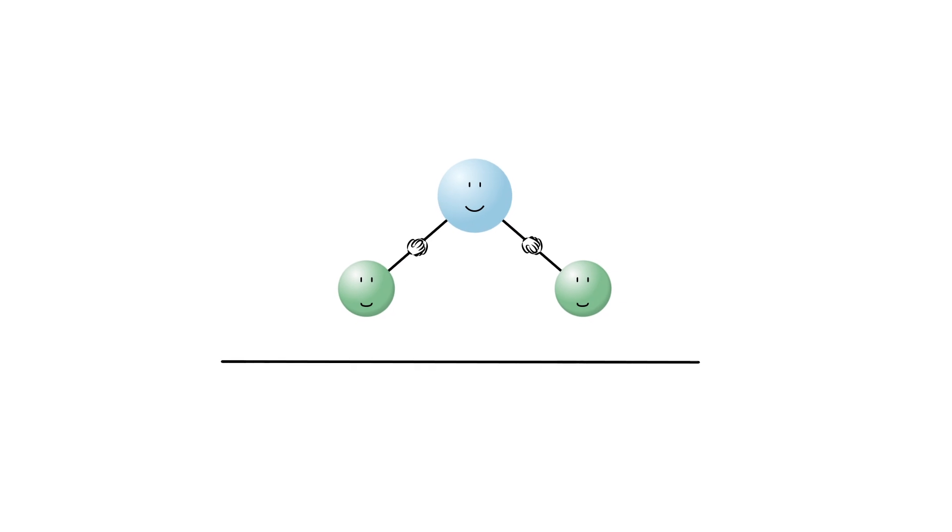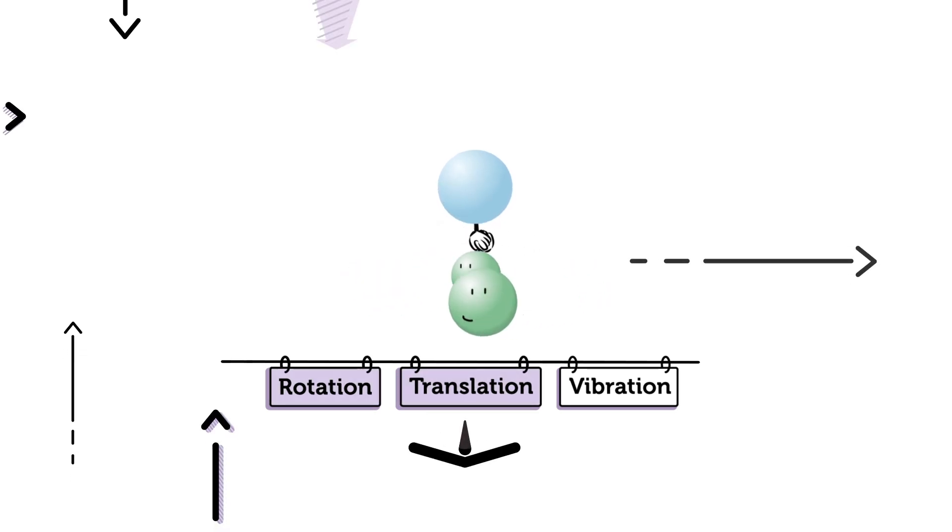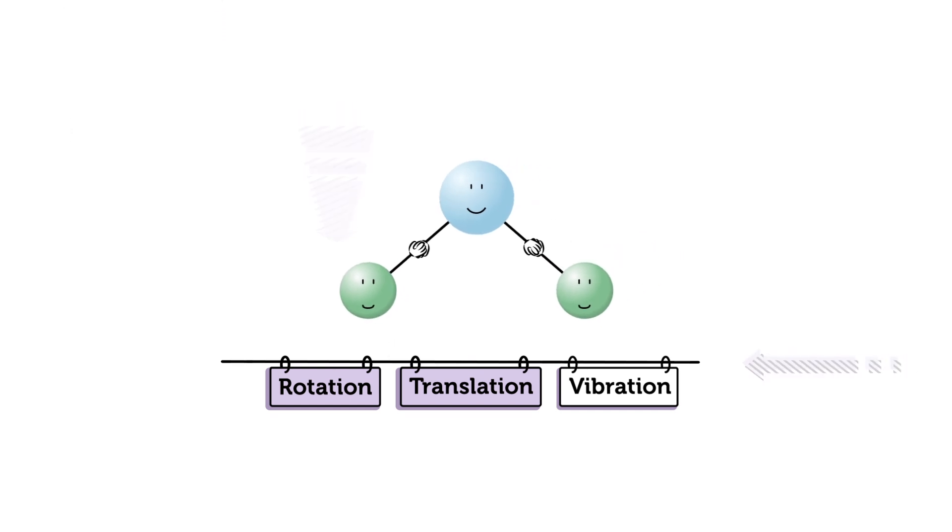There are three basic ways molecules can move: rotation, translation, and vibration. Rotation and translation move a molecule in space, while its atoms stay the same distance apart. Vibration, on the other hand, changes those distances, actually altering the molecule's shape.